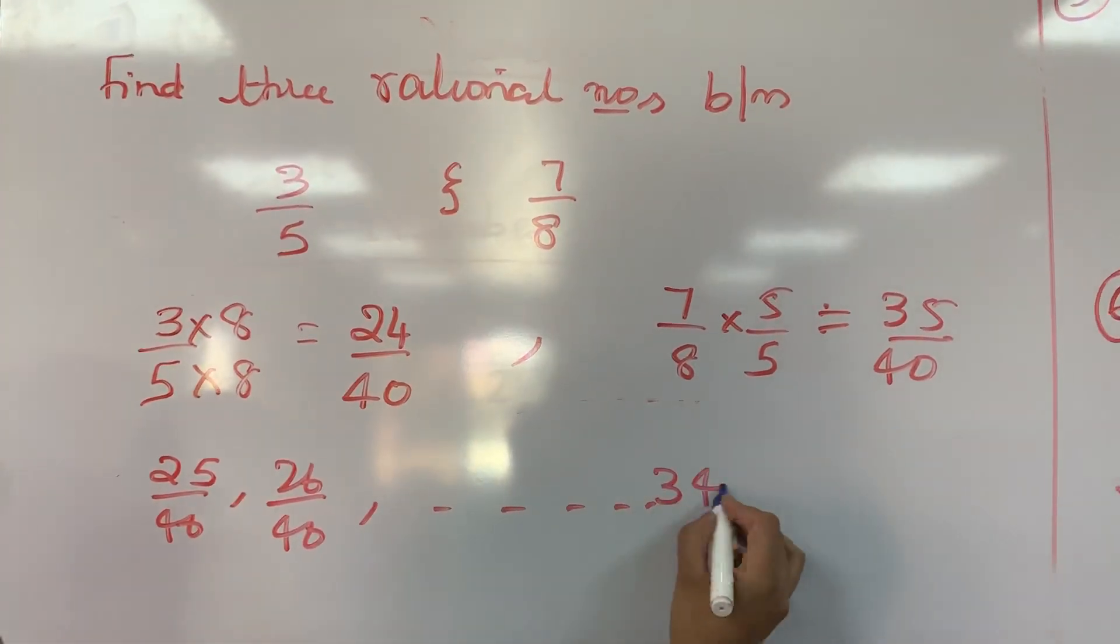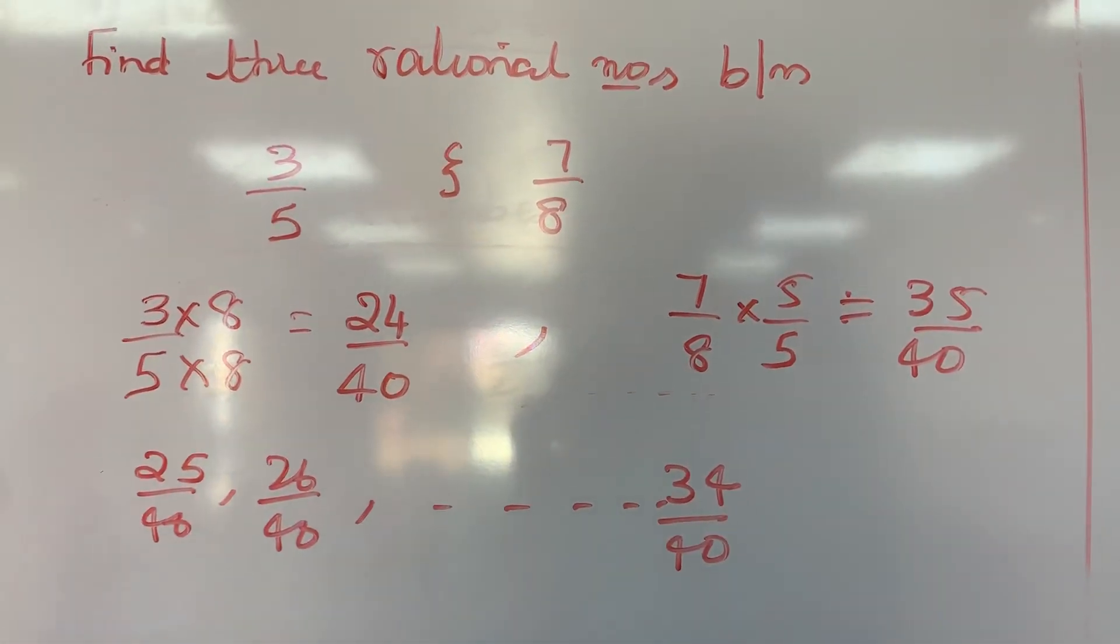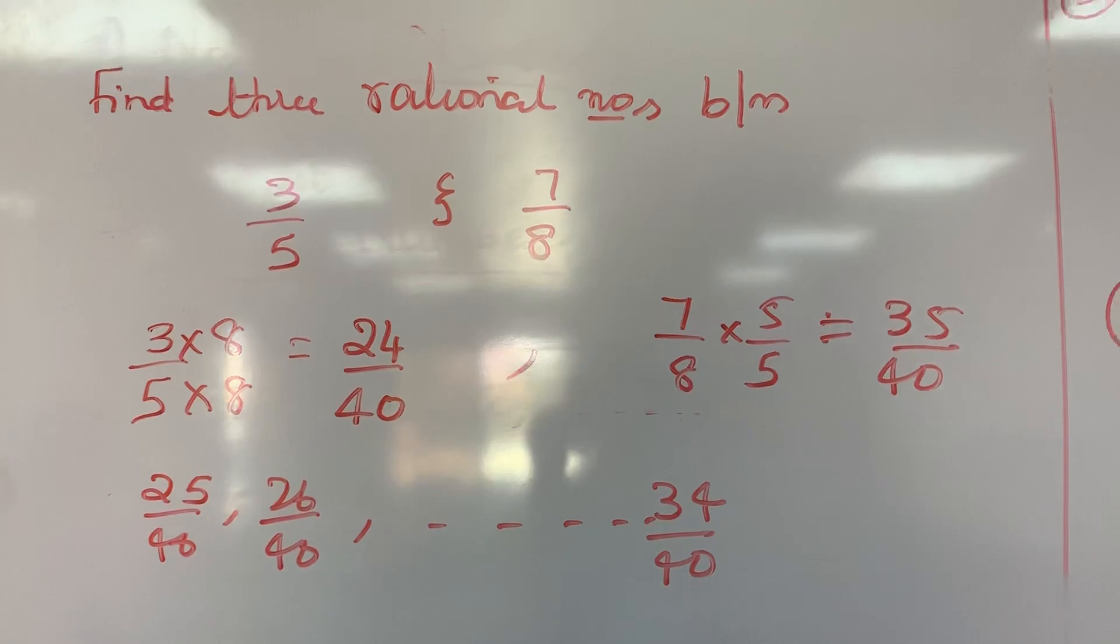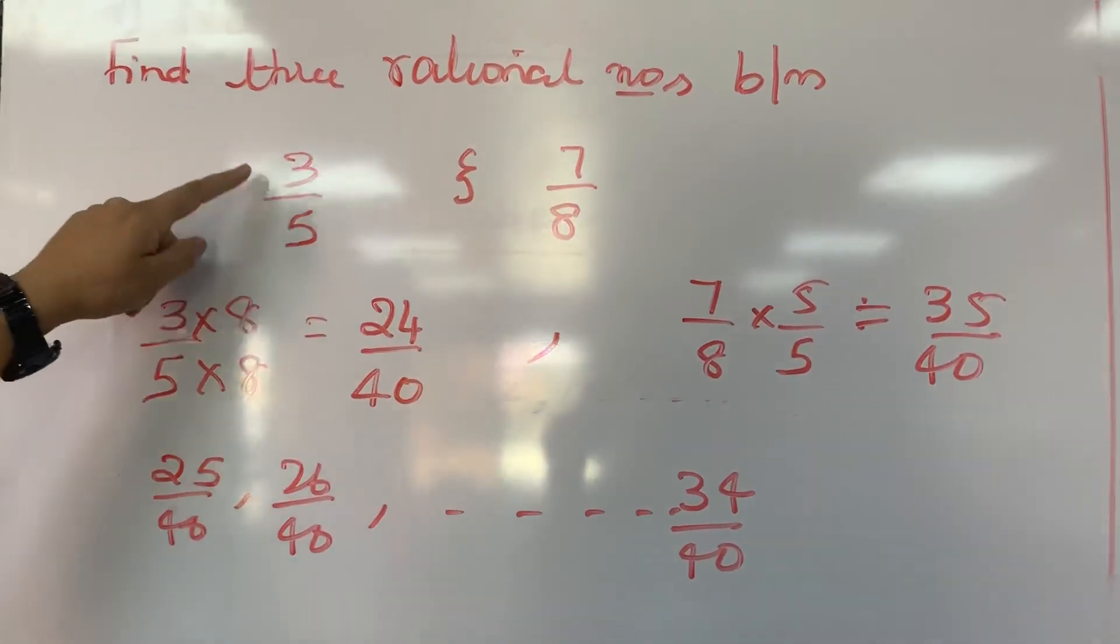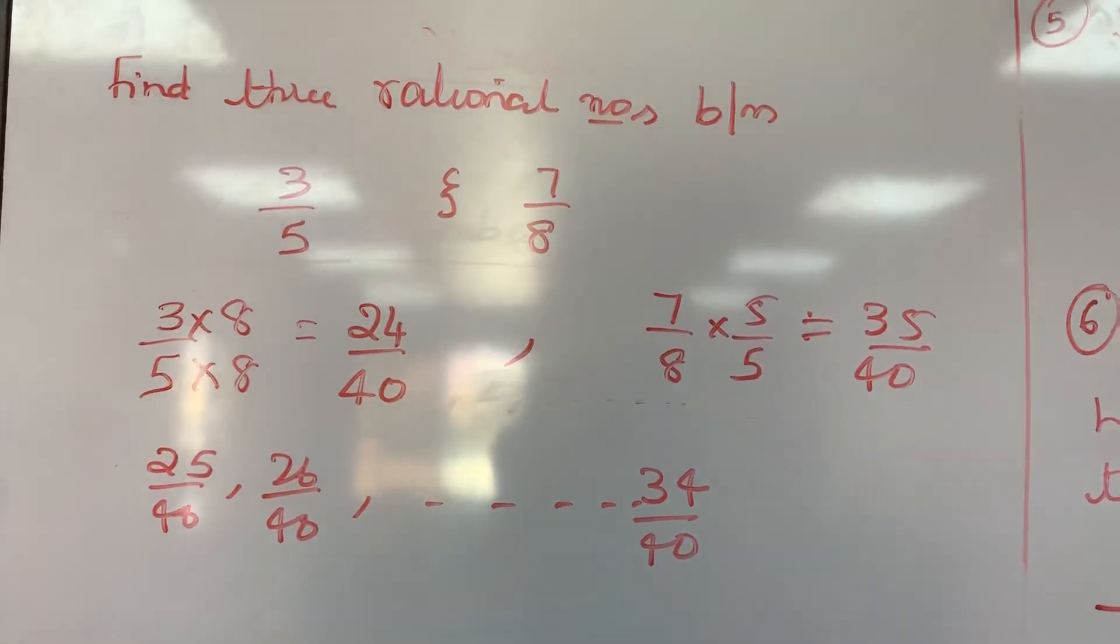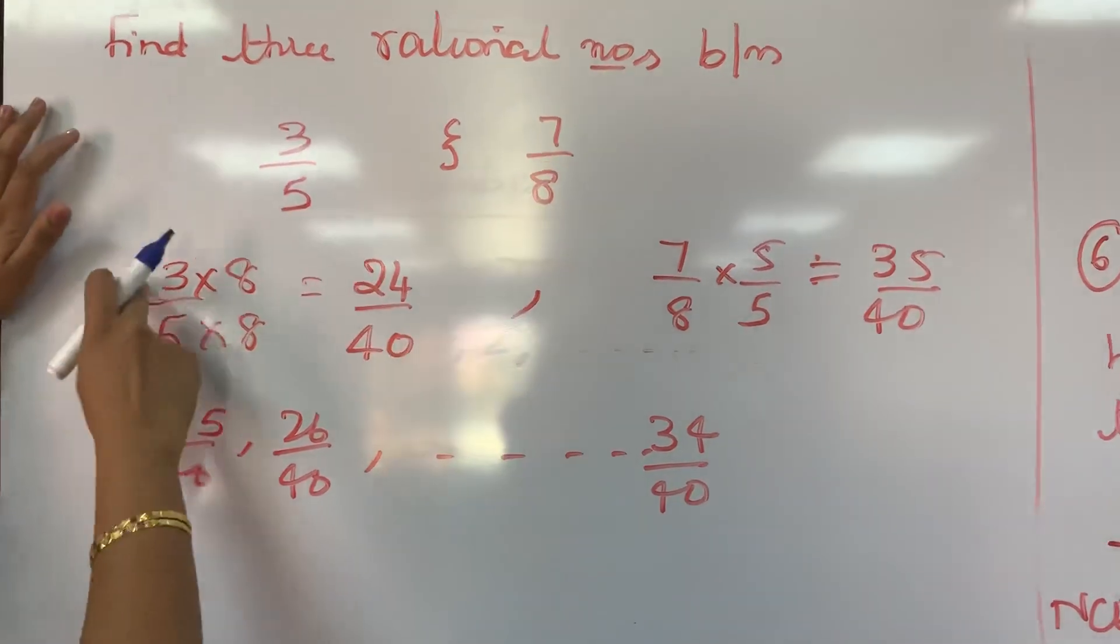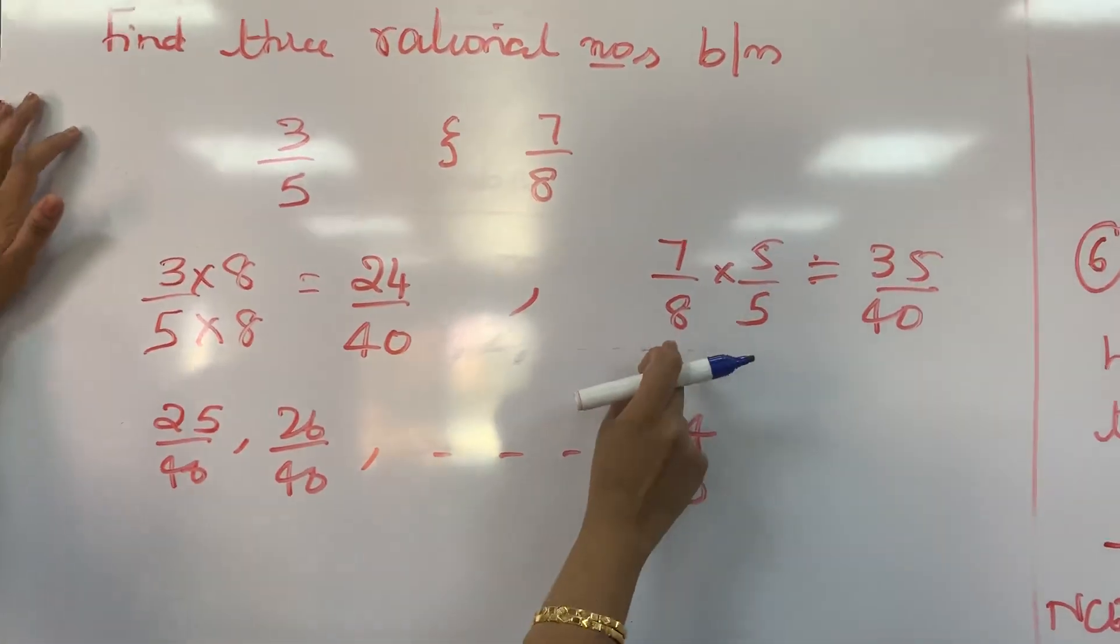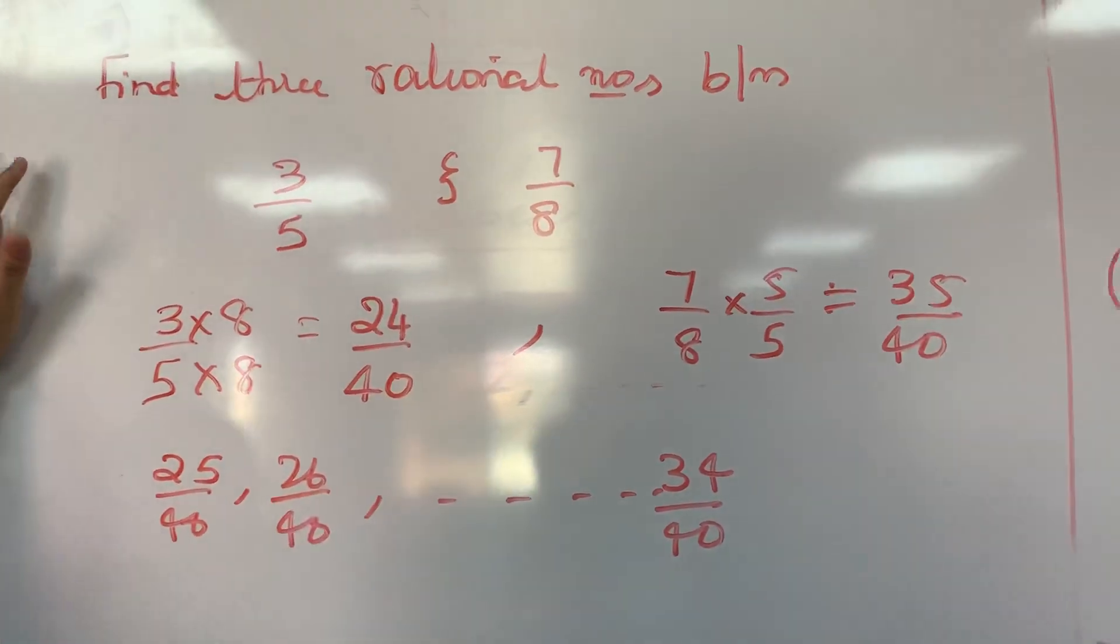I will repeat. See here till now whatever you have done is denominator was same. But here denominator is different. So question is find 3 rational numbers between 3 by 5 and 7 by 8. First look for whether denominator is same or not. If not, make it same. Very easy. First write the number 3 by 5 and 7 by 8. Whatever is denominator here, multiply and divide here. It will become 24 by 40. It is like taking LCM.